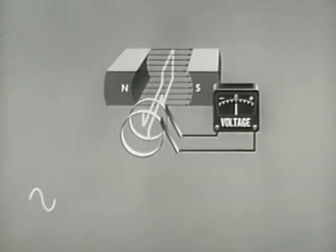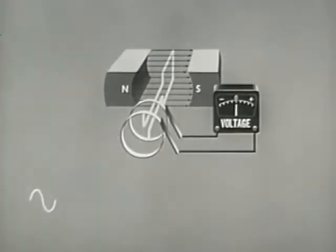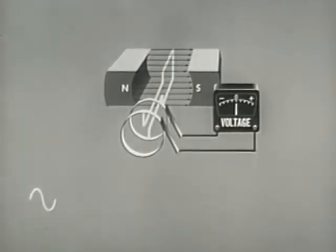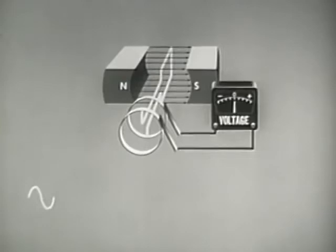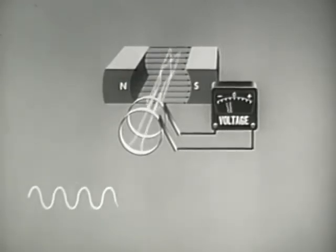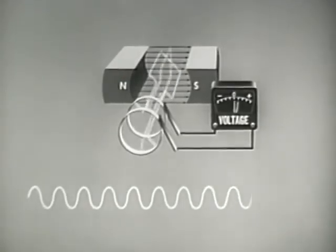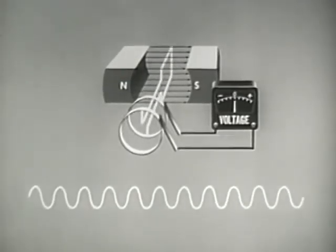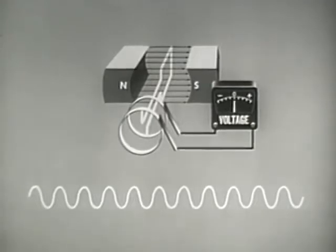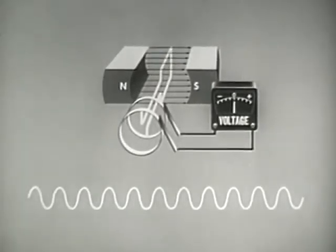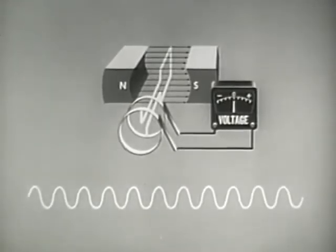If the armature rotates once each second, the frequency of the alternating electromotive force or voltage is one cycle per second. Ten mechanical revolutions of the armature per second produce a frequency of ten cycles per second. The frequency — the number of cycles per period of time — is directly related to the rotating speed.